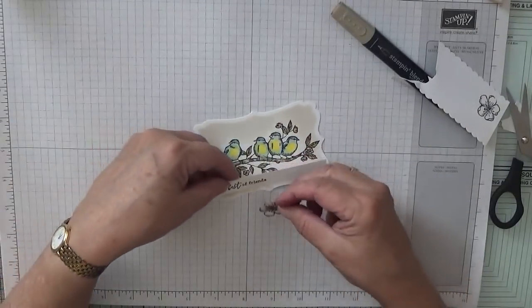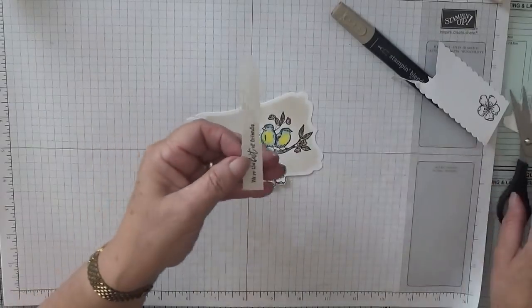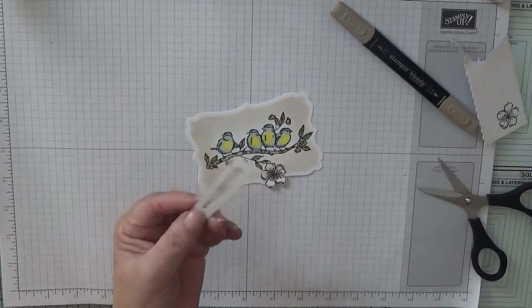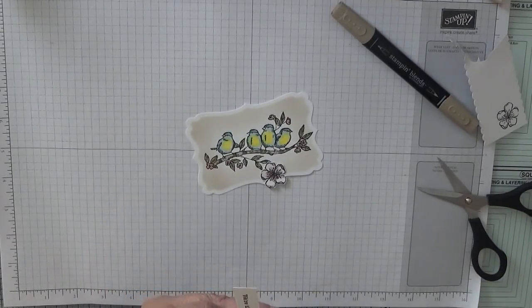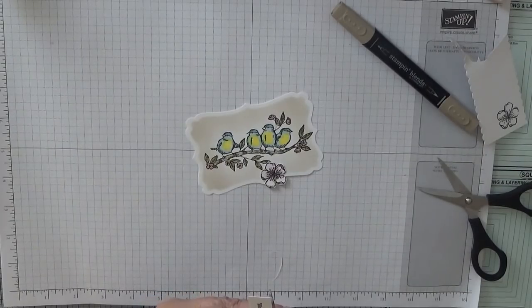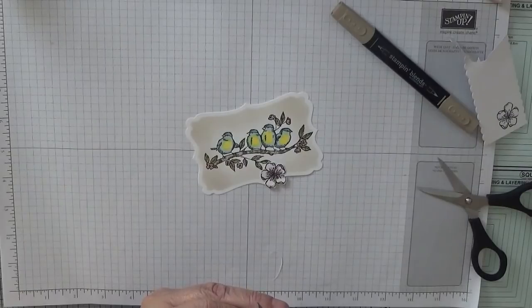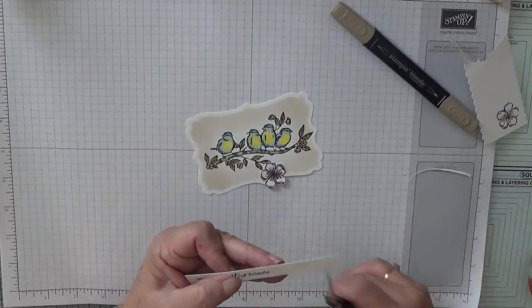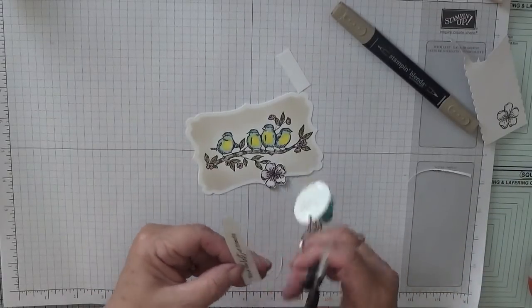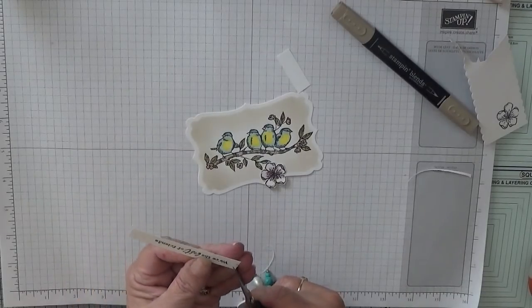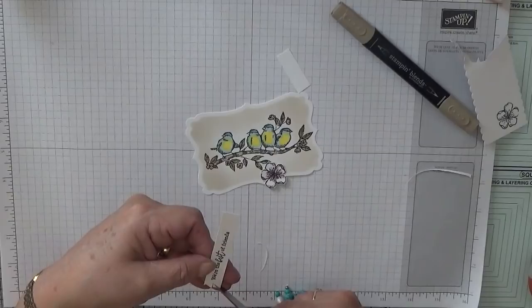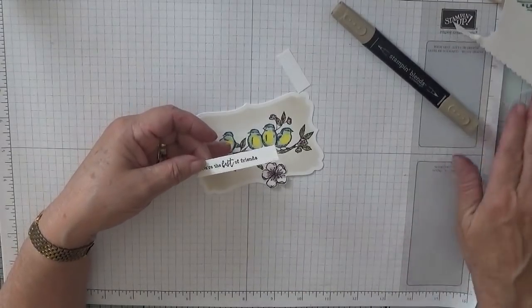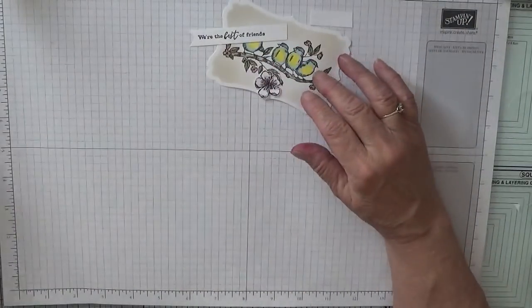And that will sit on the ends of the sentiment, but we need to straighten this up a bit. There's my big scissors. Cut that end off and flag this end. There we are, and bring our card base in.